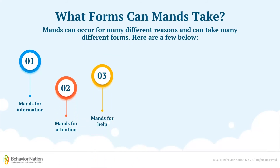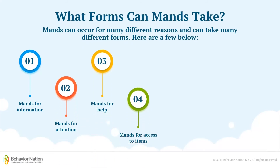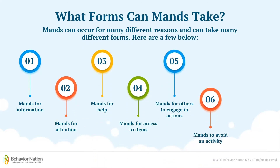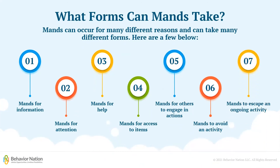Mands can take many different forms and happen for many different reasons. For example, your child could mand for information — something like, "Where did I leave my backpack?" or "What's your favorite color?" There can also be mands for attention: "Hey, look at me, over here." There could be mands for help: "Can you open my snack container?" There could be mands for access to items: "I want my favorite toy now, please."